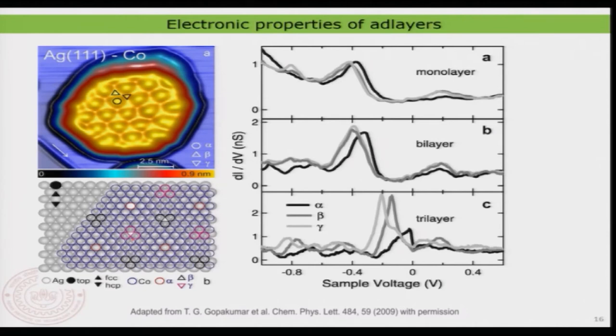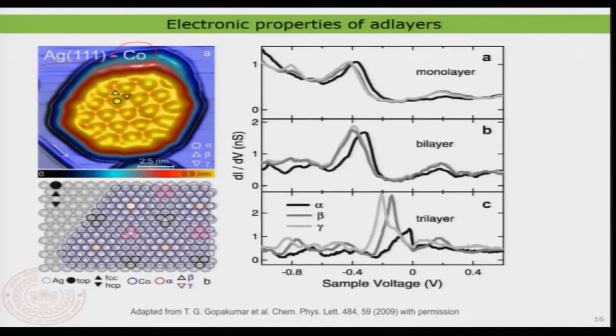Another example is cobalt atoms or cobalt adlayer deposited on silver 111 surface. This interface has very high strain, and we previously noted it shows a moiré pattern because different cobalt atoms adsorb differently on the surface. Now something interesting: experiments comparing monolayer, bilayer, and trilayer cobalt show a strong variation in the density of states between these thicknesses.